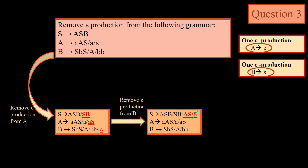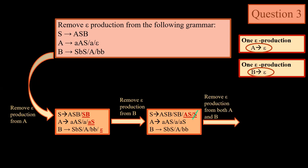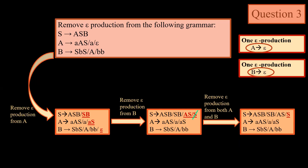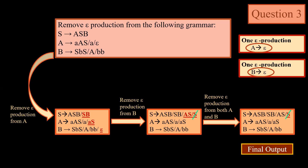S → S is a self unit production, so it will be removed directly. Now we will remove the epsilon production from both A as well as B. What we get in this case is S → S again, which is a self unit production that will be removed directly. This is the final output we generate after removing epsilon.